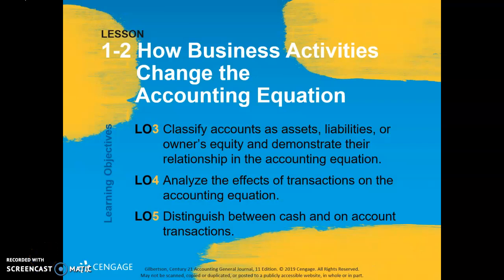Welcome back. Before we cover Lesson 1-2 on how business activities change the accounting equation, just a quick review from Section 1-1. We talked about what accounting is — accounting is really planning, recording, analyzing, and interpreting financial information. The role of accounting is to record and report all of that in a financial statement so that it can be used by stakeholders to make decisions and to measure performance of a business. We also talked about the net worth statement, which looks at personal assets — the things you own — minus liabilities, the things you owe, to get to net worth.